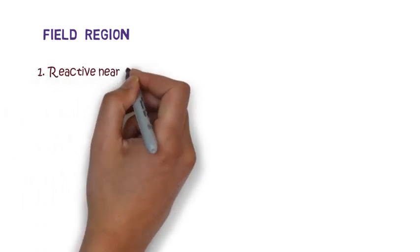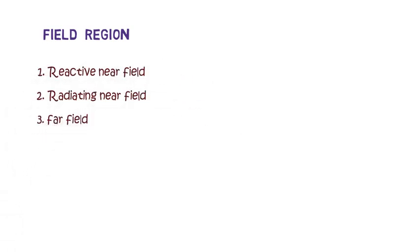Now let's talk about field region. Field region is the space around any antenna. It has been divided into three categories: the reactive near field, the radiating near field, and the far field.